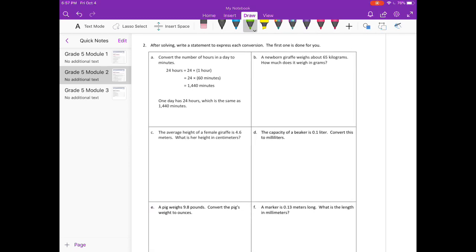Number 2. After solving, write a statement to express each conversion. The first one is done for you. So we'll go on to number B. A newborn giraffe weighs about 65 kilograms. How much does it weigh in grams? Well, first we need to know 1 kilogram is equal to 1,000 grams.